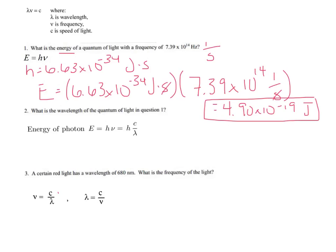Since nu is equal to C over lambda, you can substitute it in for the nu here, and you get H times C over lambda. So now we're looking for the wavelength, which is right here. Now we're going to manipulate this equation to say that lambda is equal to HC over E.